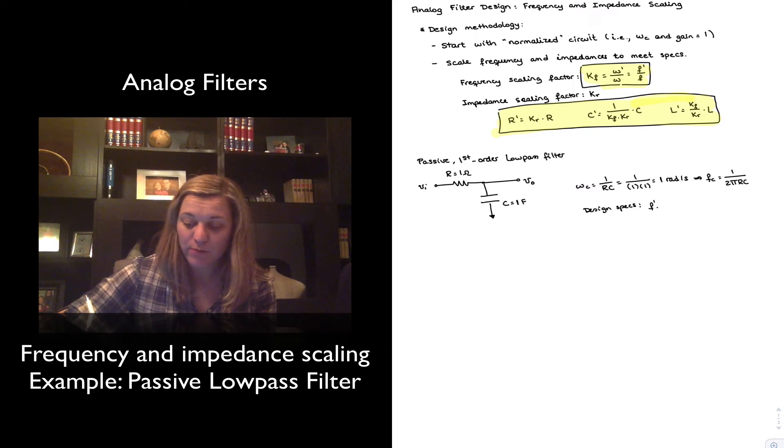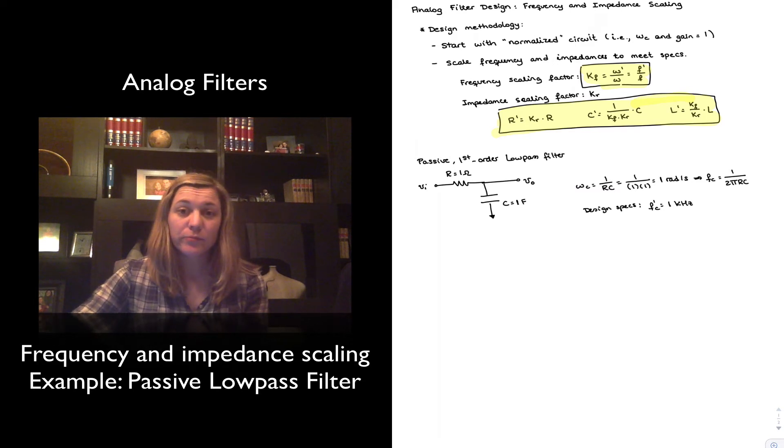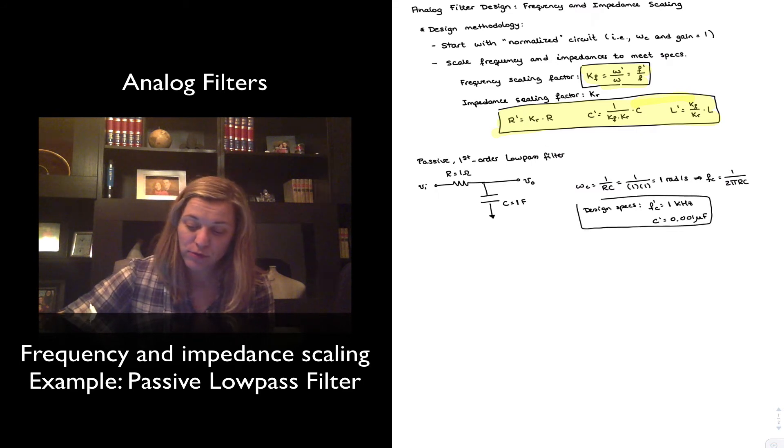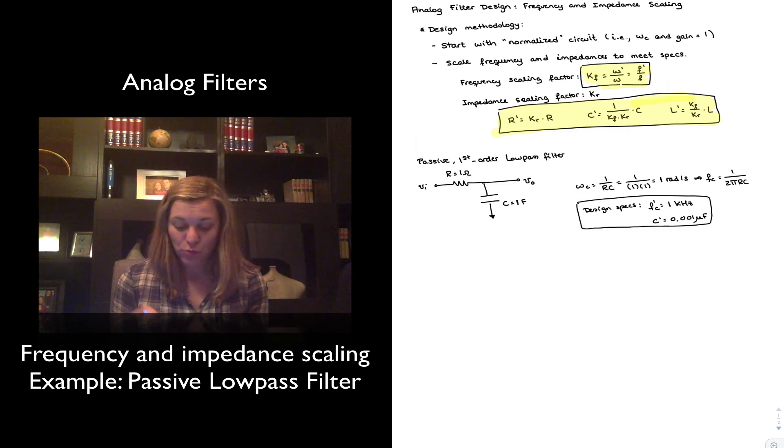So my f prime is going to be one kilohertz. And that might have been it. We may not have any further constraints. But let's assume that we want to use a particular capacitor value. We want our C prime to be equal to 0.001 microfarads, or one nanofarad. So these are my design specs. And now I need to use frequency and impedance scaling to modify the normalized circuit in order to meet these specs.